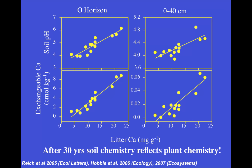I'm going to walk you through this graph. On the left side, we're looking at the O horizons — the organic horizon in these sites. On the right set of panels, we're looking at soils from 0 to 40 centimeters. On the x-axis is the litter calcium — the calcium levels in the litter being input into the system. Calcium varies greatly, from rather low levels to really high calcium litter being put into the site.